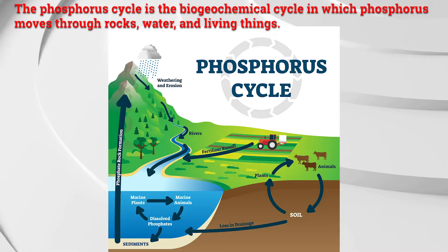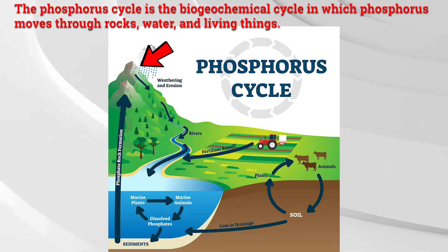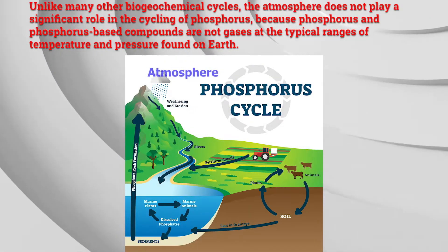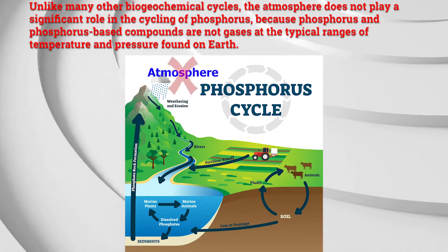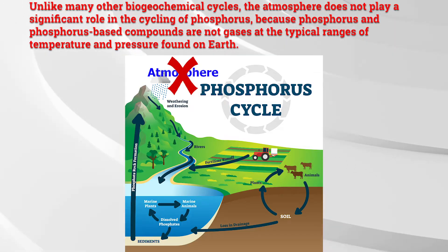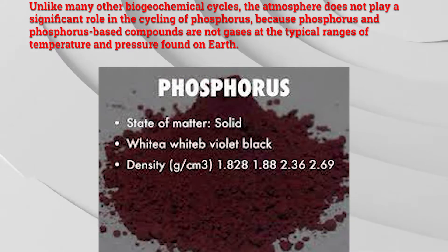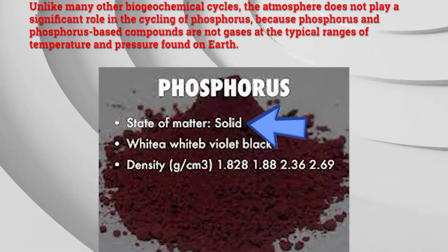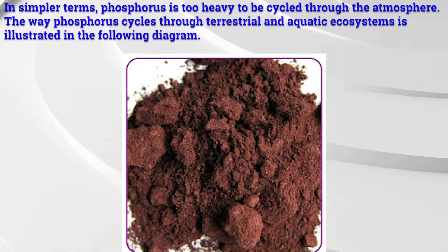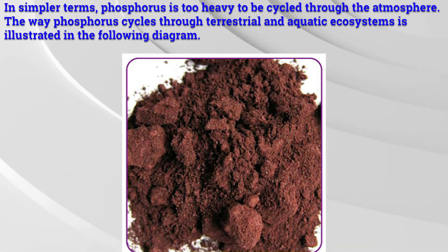The phosphorus cycle is the biogeochemical cycle in which phosphorus moves through rocks, water, and living things. Unlike many other biogeochemical cycles, the atmosphere does not play a significant role in the cycling of phosphorus, because phosphorus and phosphorus-based compounds are not gases at the typical ranges of temperature and pressure found on Earth. In simpler terms, phosphorus is too heavy to be cycled through the atmosphere.